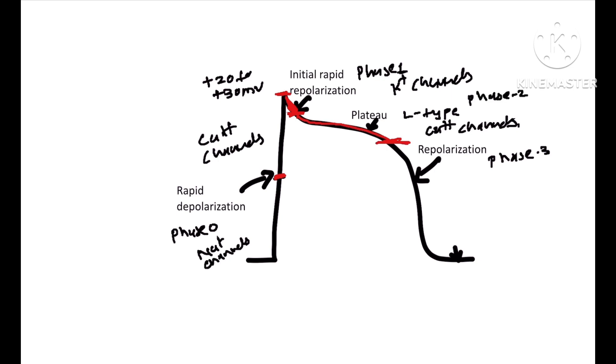In the phase of repolarization, there will be closure of calcium channels and opening of potassium channels. This causes outflow of potassium ions, and the membrane potential falls to resting value.